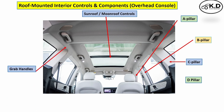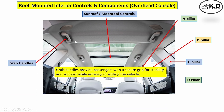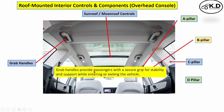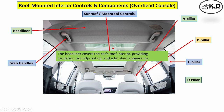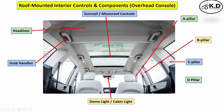The next part is the grab handle. All grab handles are provided to give a secure grip to the passenger for stability and support while entering or exiting the vehicle. The headliner again provides an aesthetic look as well as soundproofing and insulation, reducing heat. The next is the dome light or cabin light, which provides light inside the car during night travel.